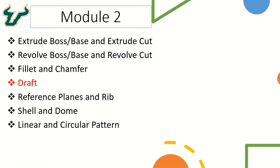Hello and welcome to this part of the SOLIDWORKS features. In module 2 we will be looking at how to create a draft feature. The draft feature is used to provide taper to the face of a solid model. Let's take a look at how to create this draft feature in SOLIDWORKS.